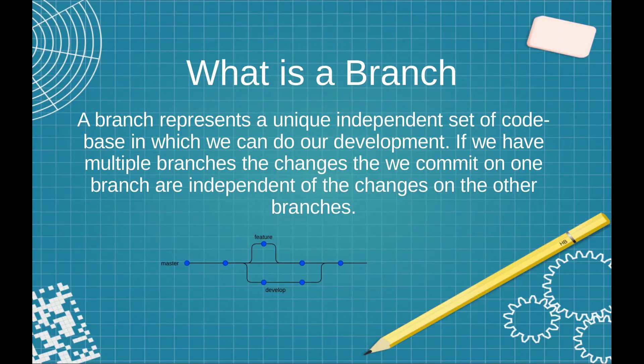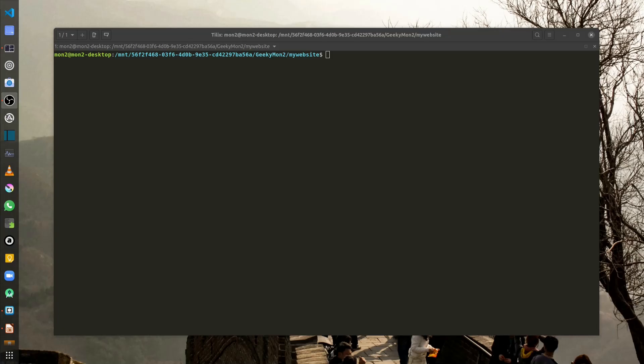A branch represents a unique, independent set of code base in which we can do our development. If we have multiple branches, the changes that we commit on one branch are independent of the changes on the other branches.